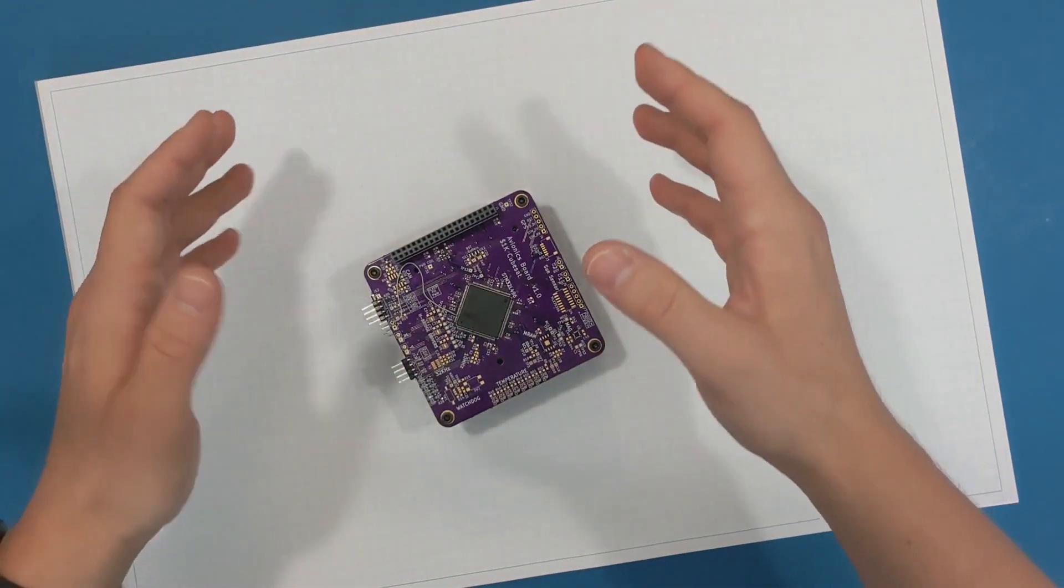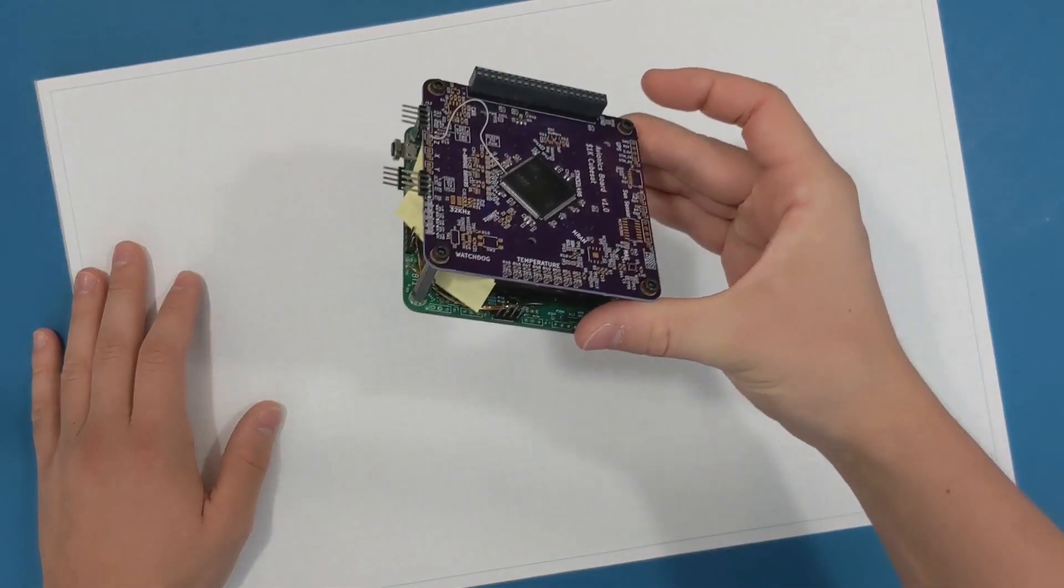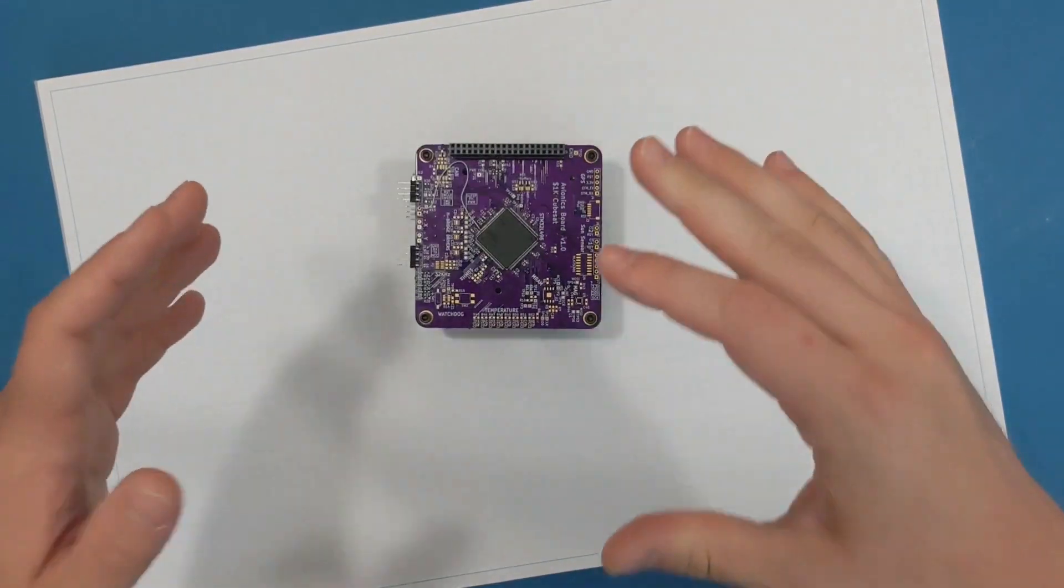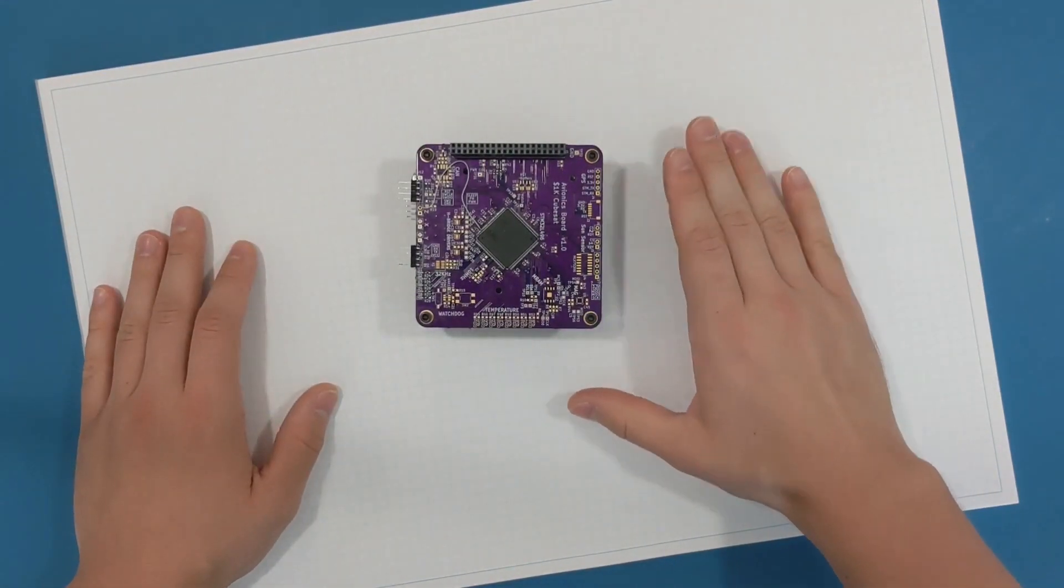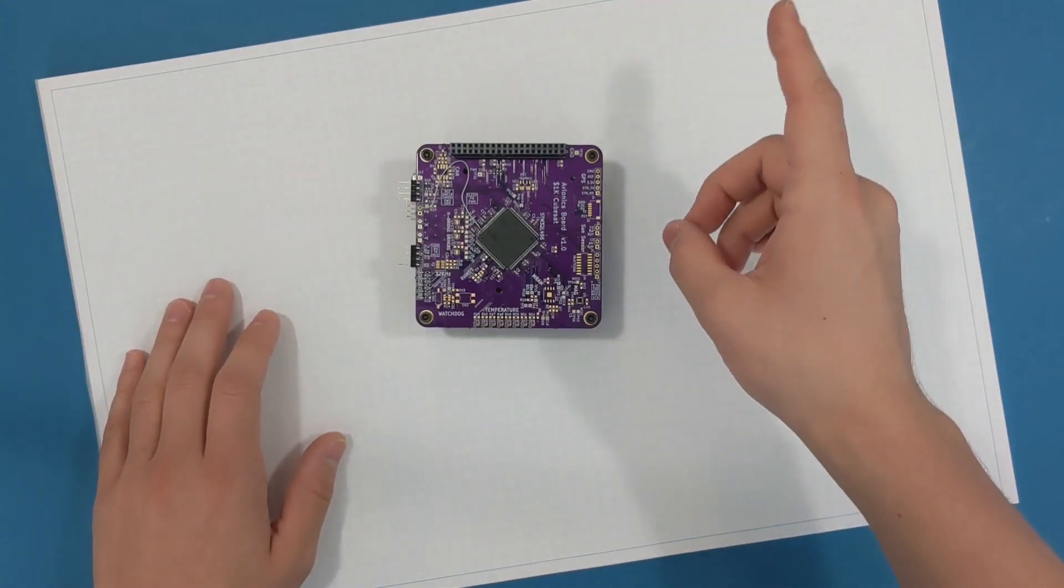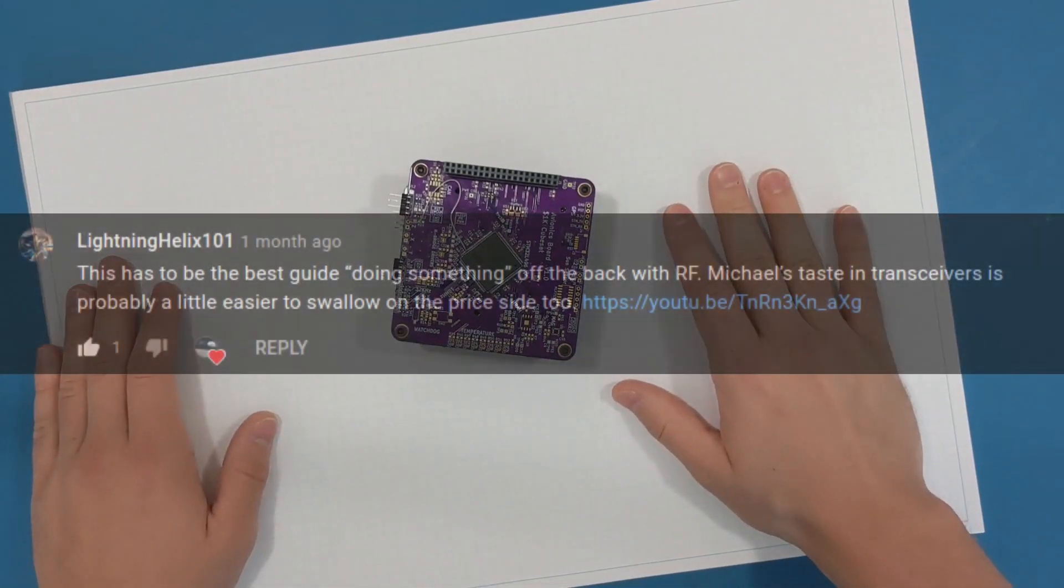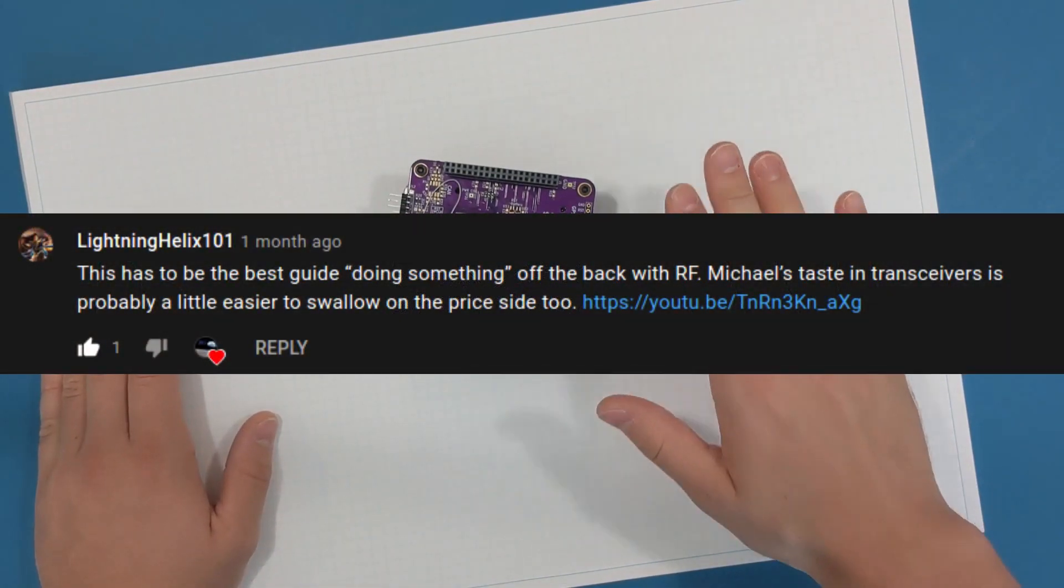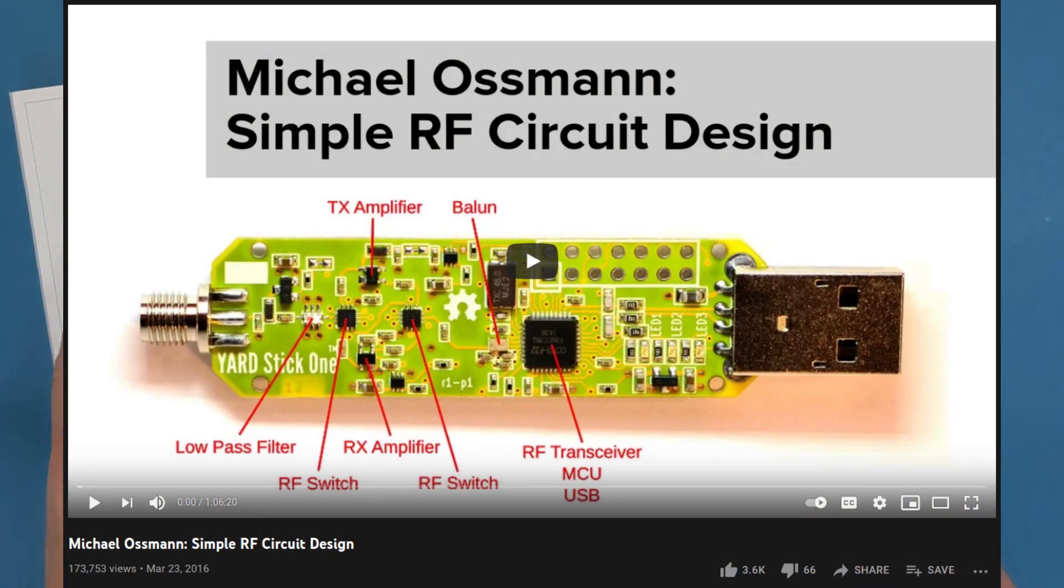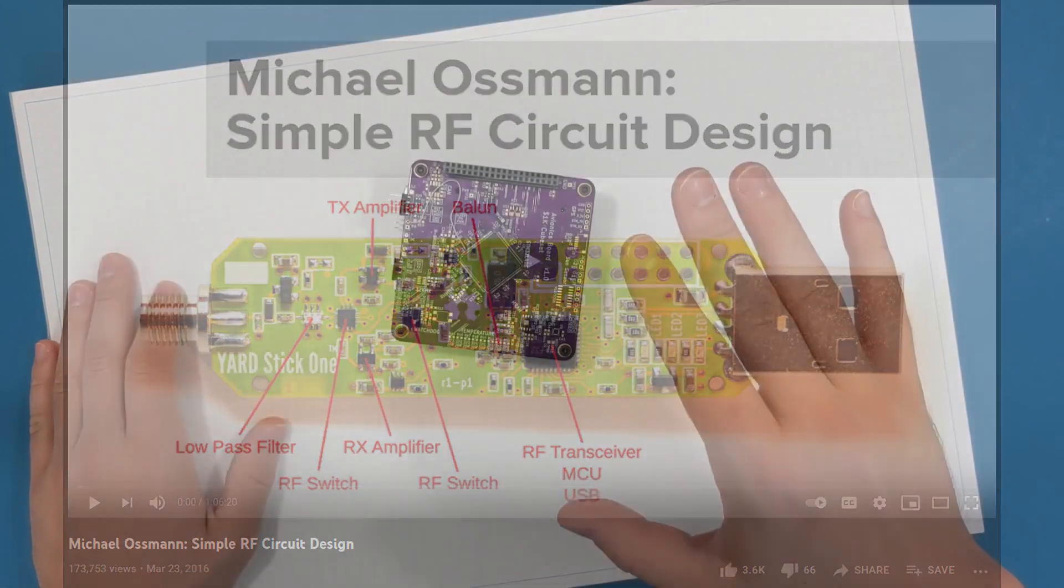In my last video I talked about building a radio for my $1,000 CubeSat and how I really don't know much about the design space. That's true, I don't know what I'm doing when it comes to RF, but thanks to Lightning Helix 101 recommending this talk by Michael Osman about simple RF circuit design, I have enough confidence to give it a shot.